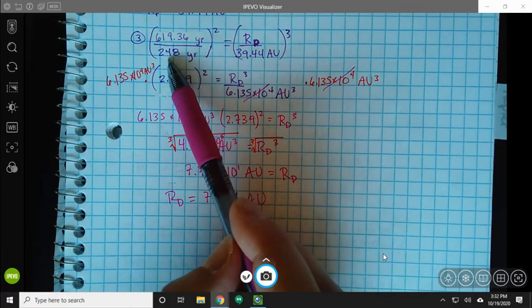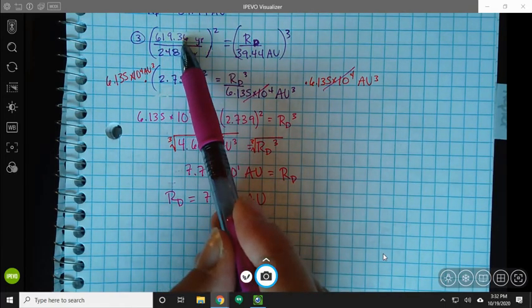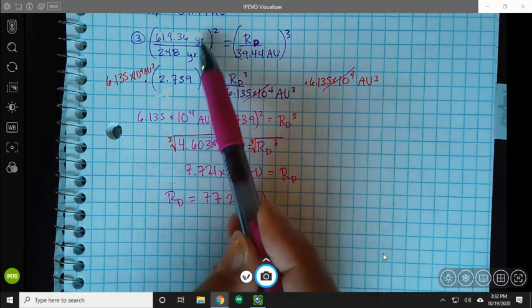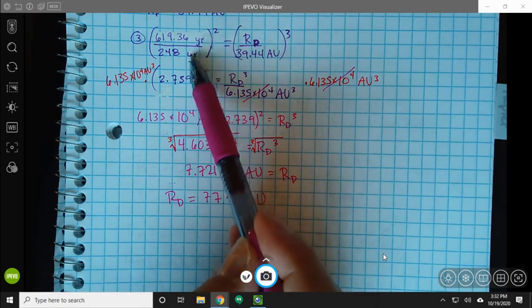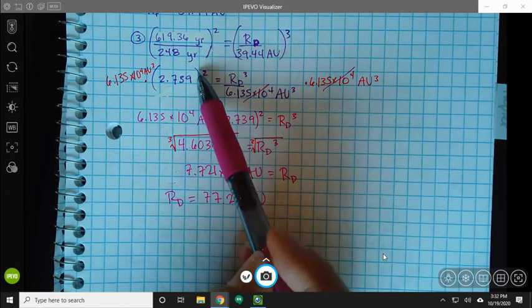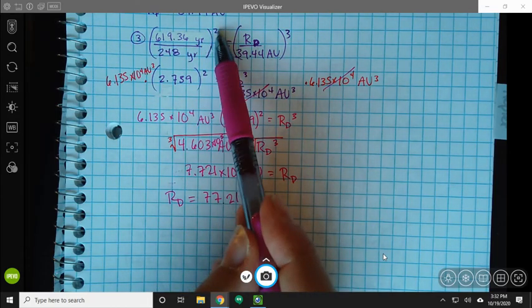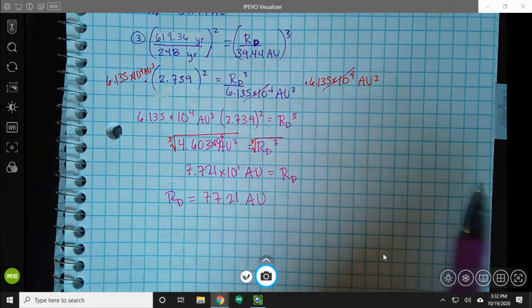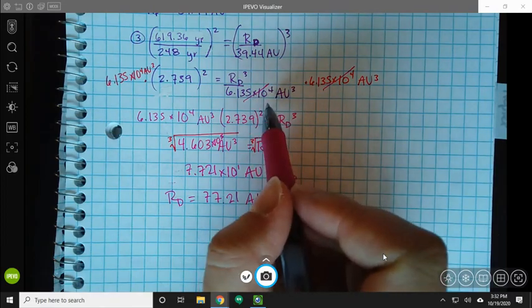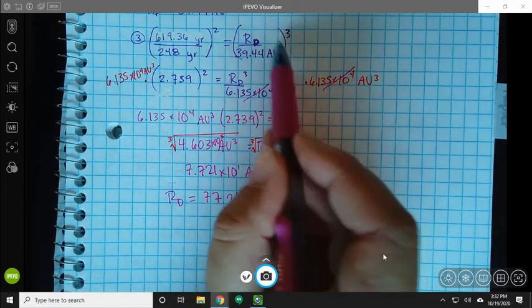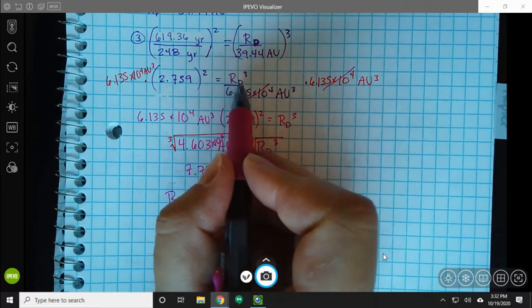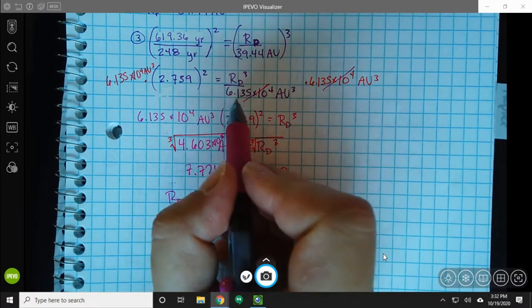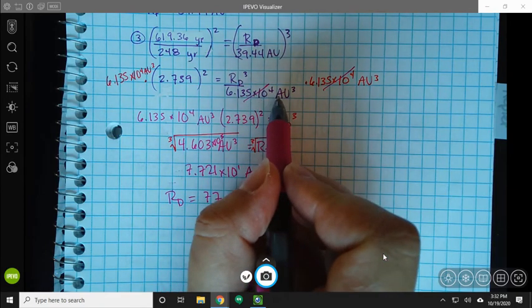So over here, I can go ahead and do my math. 619.36 divided by 248 will give me 2.739. My years are on the top and the bottom. So they cancel out. And I still have my parentheses here with the square, with the exponent outside of those parentheses. I've done the math inside the parentheses. Over here on this side, I went ahead and did my work with my exponent. So I have RD cubed over this quantity cubed, which is 6.135 times 10 to the 4th AU cubed.